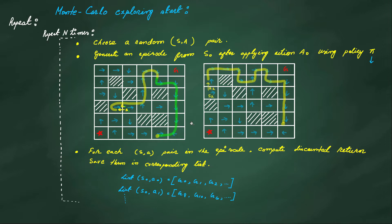Here is the algorithm. Before starting, we have to assign arbitrary Q values for every state-action pair. Q values represent the expected return we get after applying a particular action in a particular state and then onwards applying that policy. So we initially assign arbitrary values for every state-action pair.